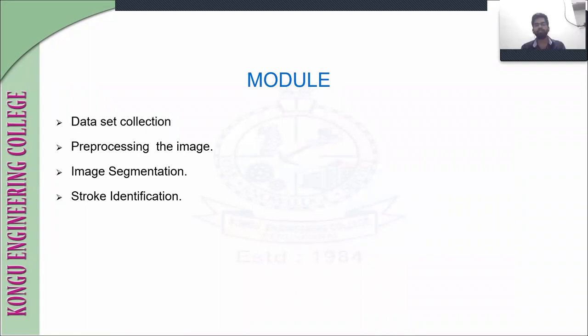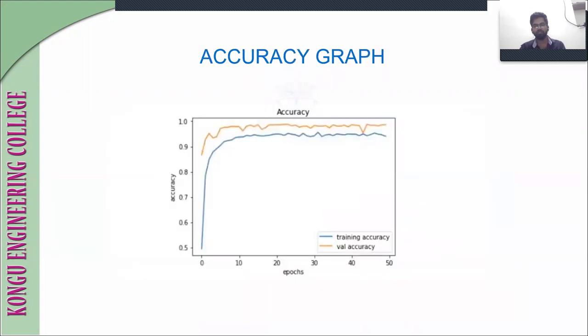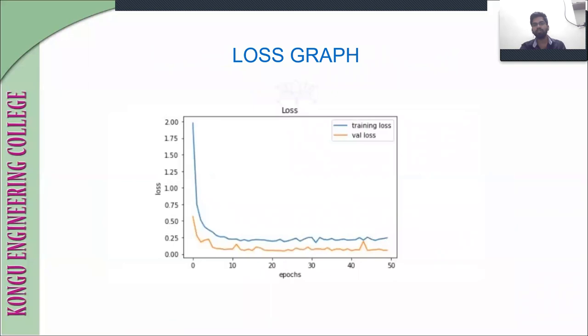The modules of our project are: collection of the dataset, passing the images, image segmentation, and finally stroke identification. This is our accuracy graph — we achieved an accuracy of 98.2 percent.